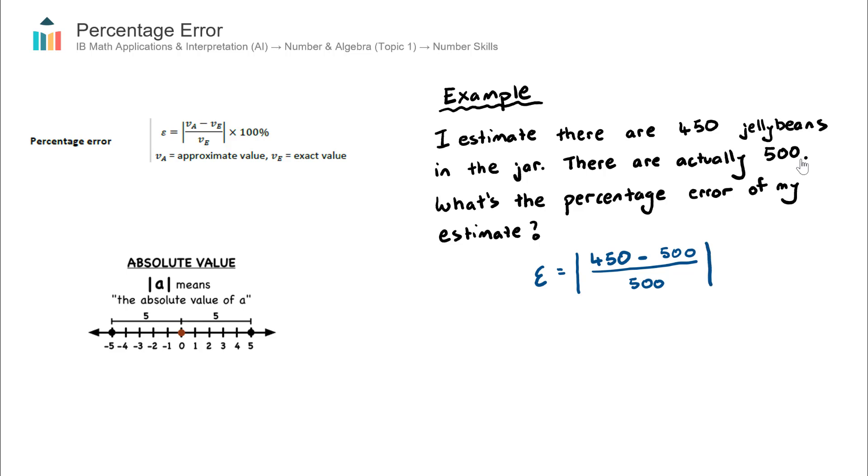Close the absolute value symbol, and then multiplied by 100, and that's just to simply turn this into a percentage. Otherwise it would be a decimal answer.